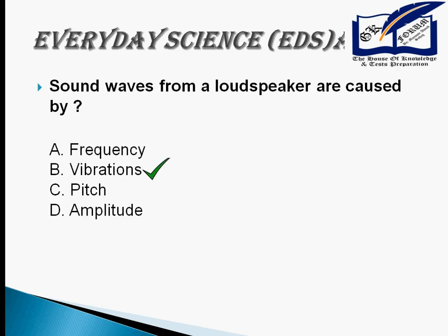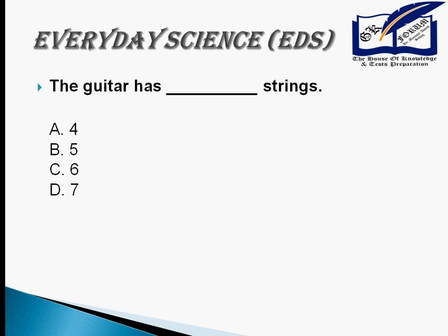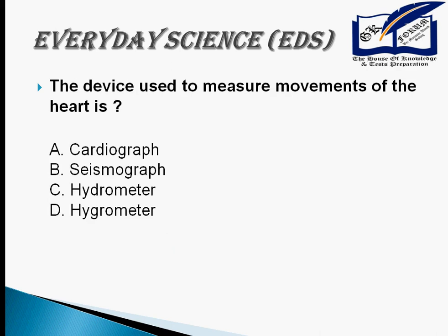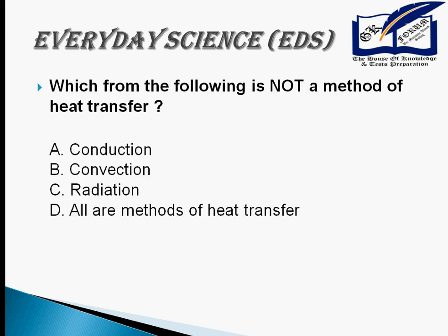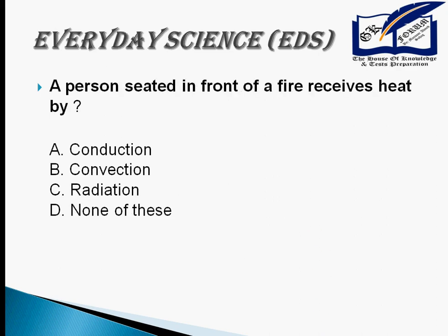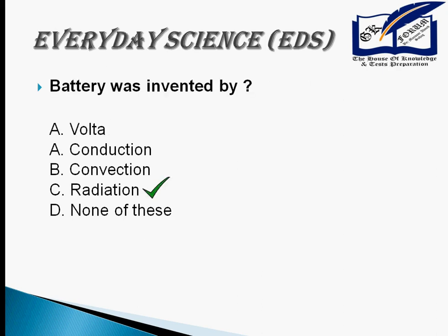Angstrom has a distance measurement in CGS systems. The device used to measure movement of the heart is a cardiograph. There are three methods of heat transfer. A person seated in front of fire receives heat by radiation.